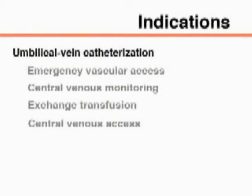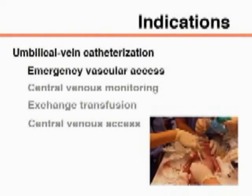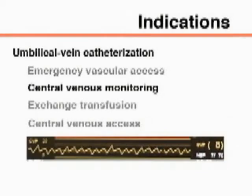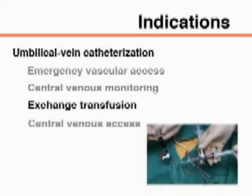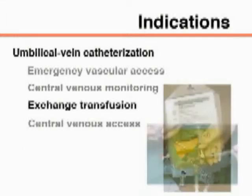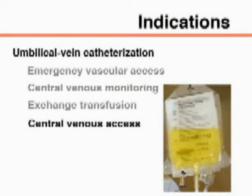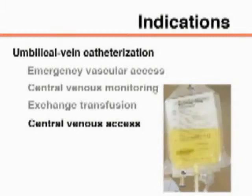Umbilical vein catheterization may be indicated for emergency vascular access, monitoring of central venous pressure, exchange transfusion, and central venous access in infants requiring long-term parenteral nutrition.